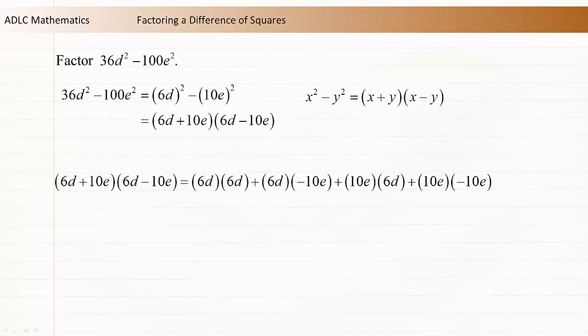6d plus 10e times 6d minus 10e is equal to 6d times 6d plus 6d times negative 10e plus 10e times 6d plus 10e times negative 10e. This equals 36d squared minus 60de plus 60de minus 100e squared.